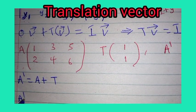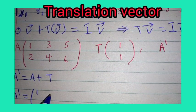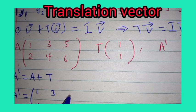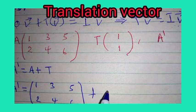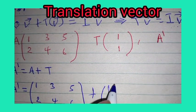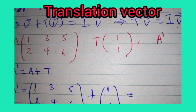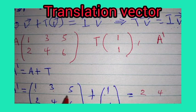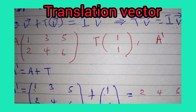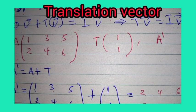So, A image equals matrix A, which is [1, 2, 3; 4, 5, 6], plus translation vector [1, 1]. The image will be: 1+1=2, 3+1=4, 5+1=6 for the x-row; and 2+1=3, 4+1=5, 6+1=7 for the y-row.